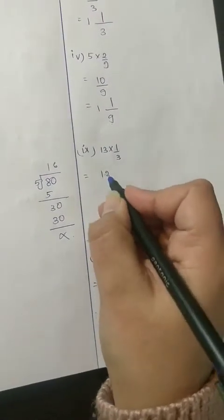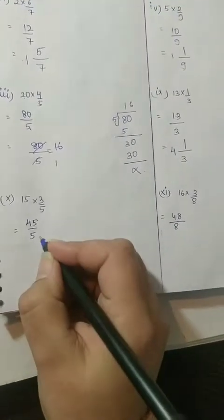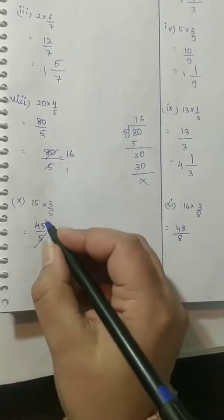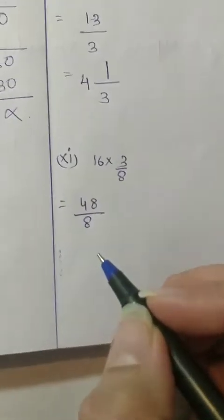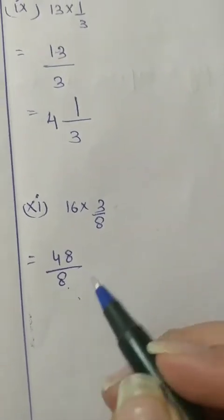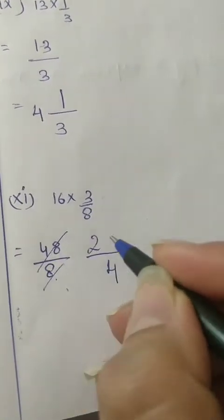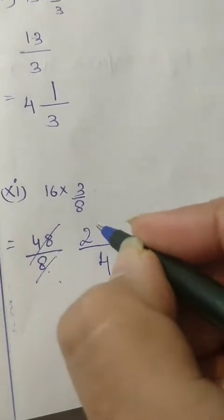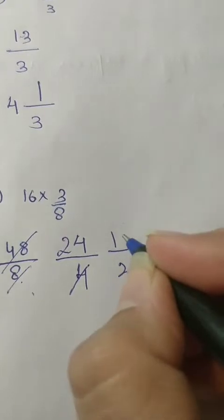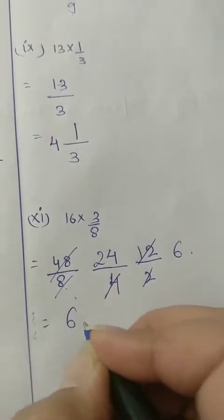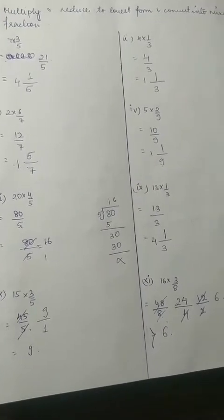Here we have 13 into 1 is 13, upon 3. We know 3 fours are 12, और यहाँ 13 है, remainder is 1. Similarly, हमें यहाँ common factors दिख रहे हैं, so we can cancel out. 5 ones are 5, 5 nines are 45, इसका answer 9. Now in this one, हमने multiply कर दिया, we will reduce it to lowest form. Even numbers हैं: 2 fours are 8, 2 twos are 4 and 2 fours are 8. 2 twos are 4 again, 2 ones are 2, and 2 — this is 6. So our final answer, reducing it into the lowest form. ऐसे ही बहुत सारे questions हैं इस exercise में.